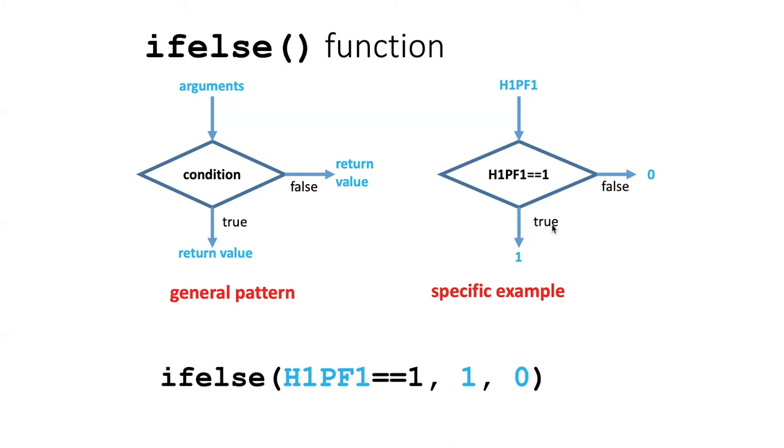So the format of the function looks like this: here's the function name, and then the first argument in the function is the condition that we want to evaluate, which evaluates as a boolean, true or false. And then the second argument is the value it should have if it's true, and the third argument is the value that it should have if it's false.